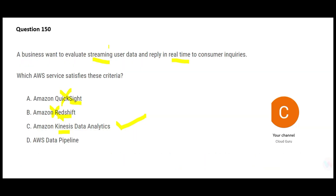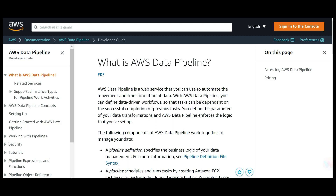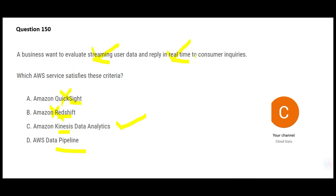Data Pipeline is used to automate transformation and movement of data — you can define data-driven workflows. But it doesn't move data in real time. It's good for ETL processes, moving data to data warehouses, and migrating from on-premises to cloud — not for real-time use cases. So Kinesis is the final answer.